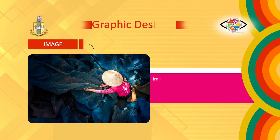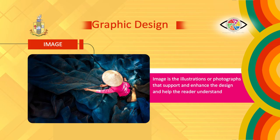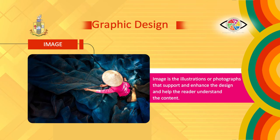Principle 4 - Image. Images are the illustrations or photographs that support and enhance the design and help the reader understand the content. The general image rule is to use graphics and images to break up the layout so that the reader has an opportunity to absorb the information. Be careful that images can be reproduced without loss in resolution — that means don't use blurry pictures. Cropping removes the unwanted parts of an image, allowing you to focus on the important parts. Be sure your pictures have meaning and support the message. Brightness is the total amount of light in an image — change brightness to change its appearance.